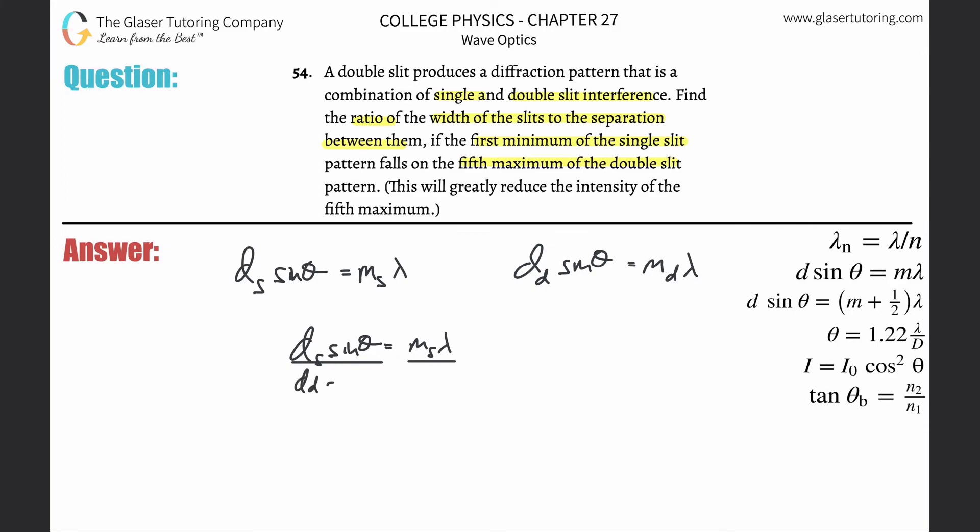DD sine theta, that was also equal to MD times lambda. Now, since these are both equal, you could just make one little equal sign in the middle. Now, again, the wavelengths are the same, so they go bye-bye. But also the angles were the same, so the sine of those angles will also go bye-bye. So in other words, what we have is MS over MD.